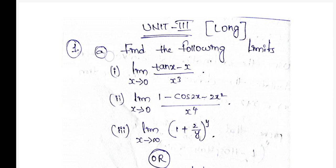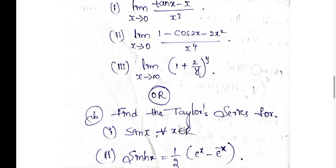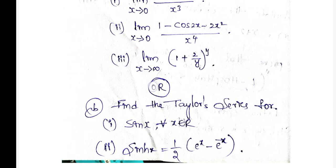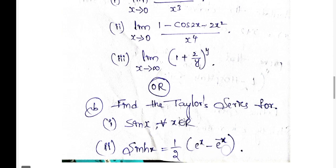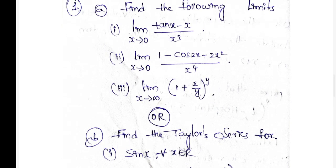First question a: find the following limits, limit x tends to 0 tan x minus x by x cube. Find the Taylor series for sinh equals 1 by 2 e power x minus e power minus x.